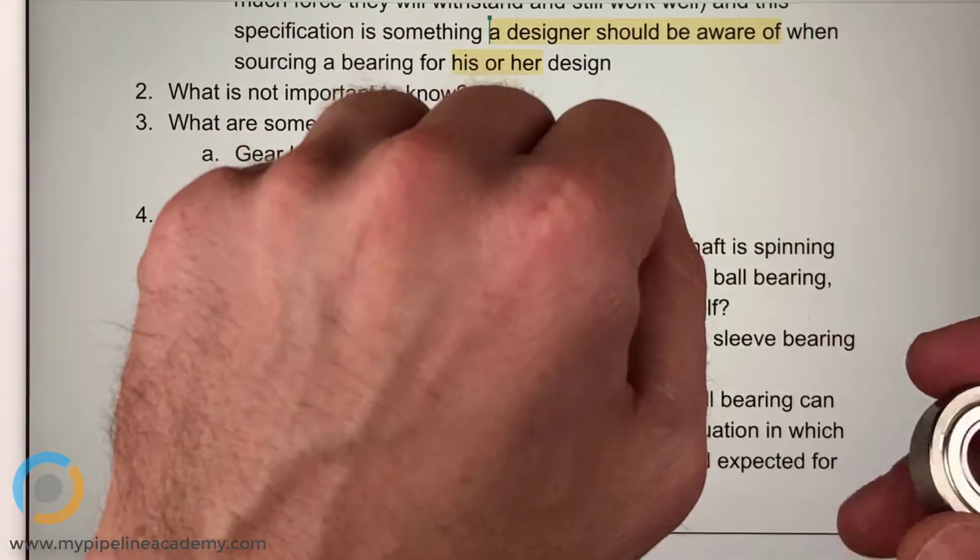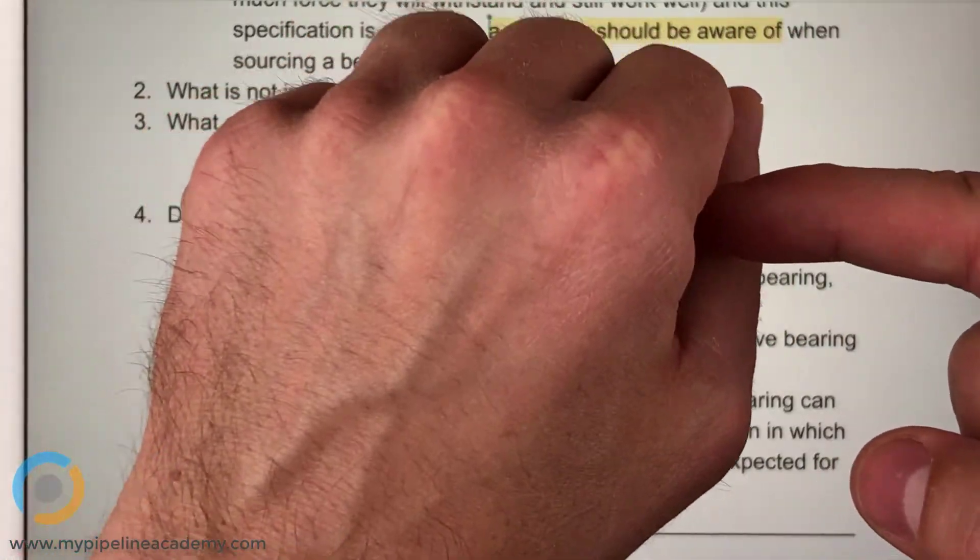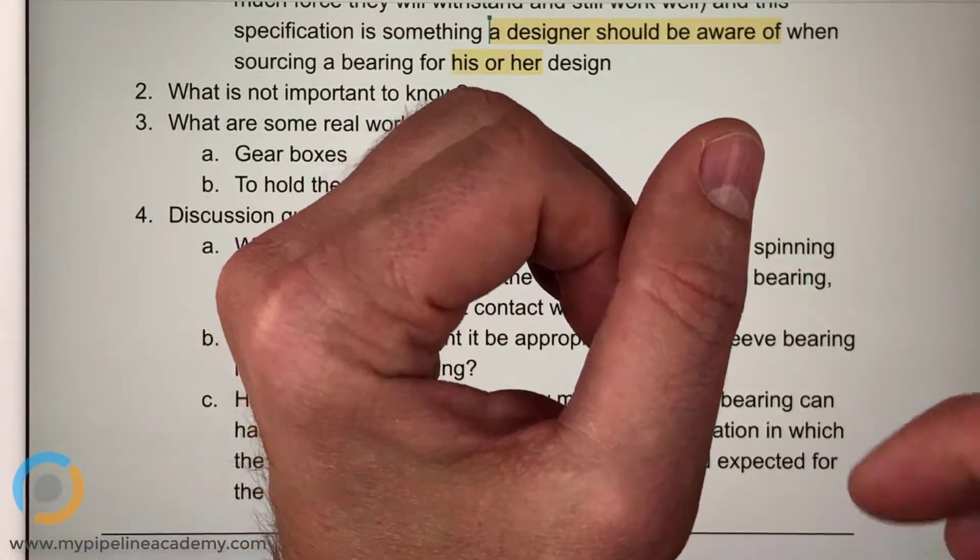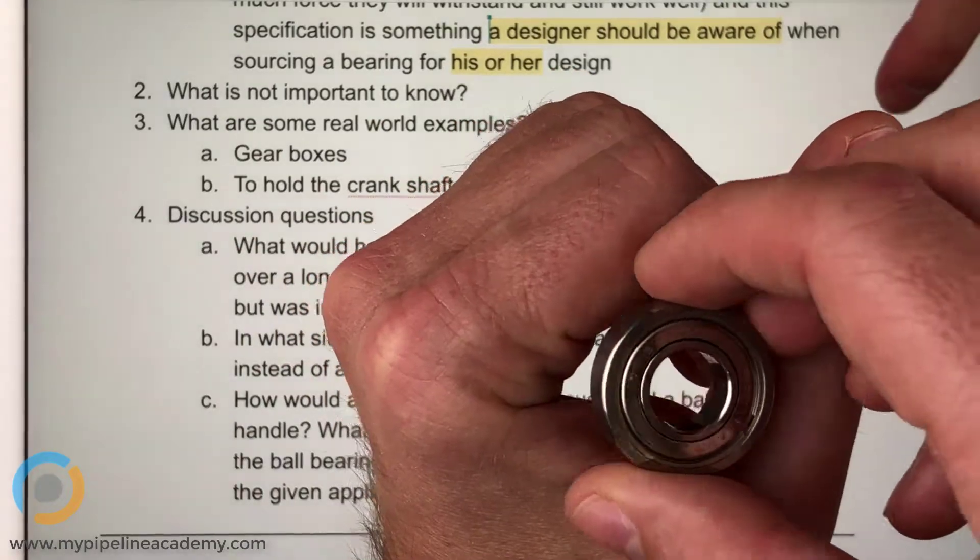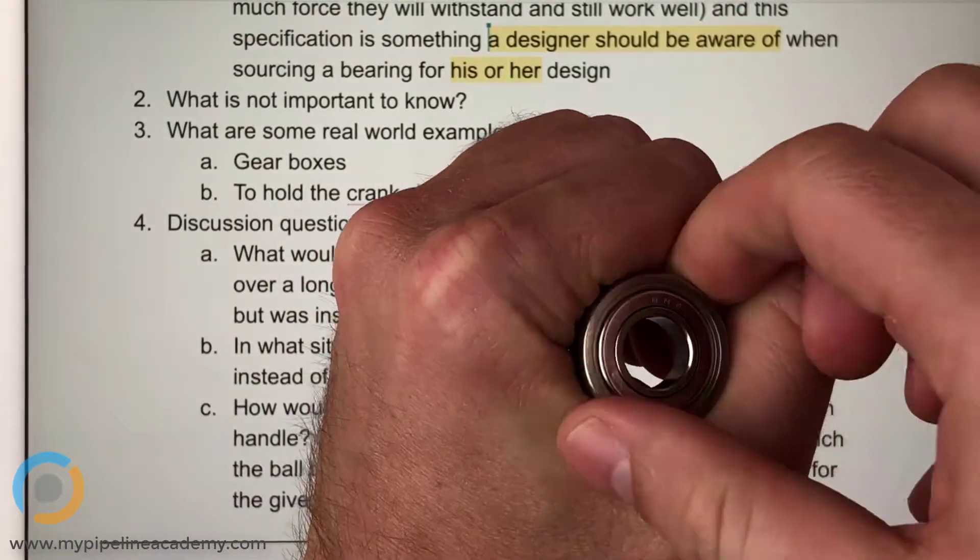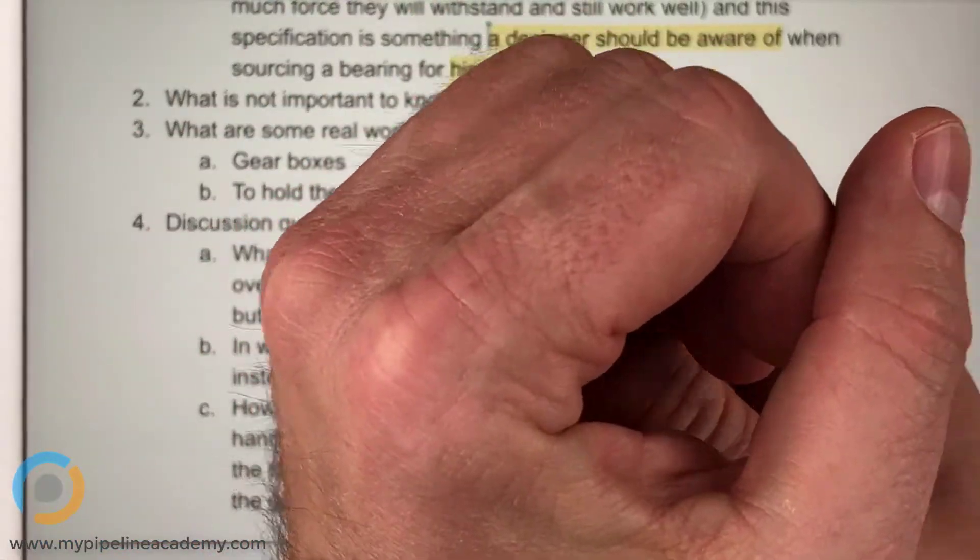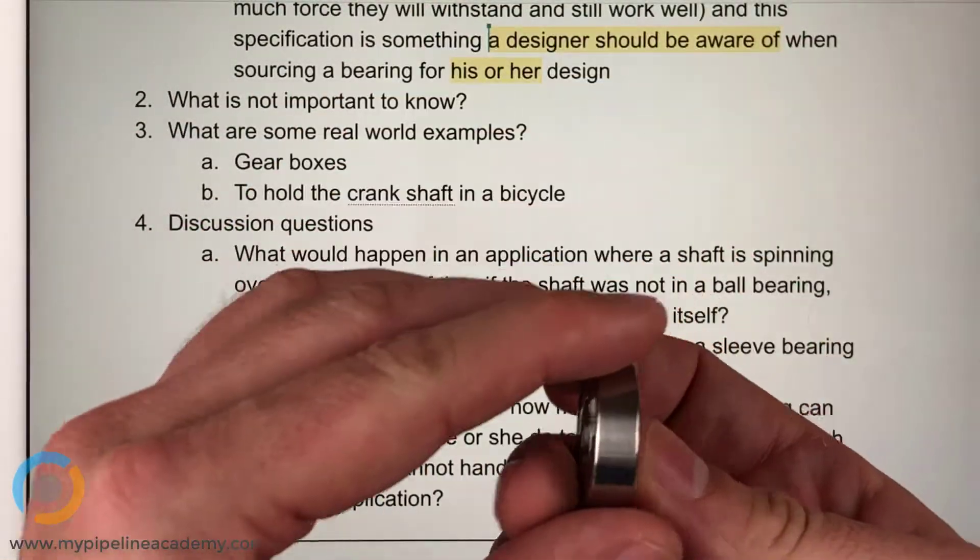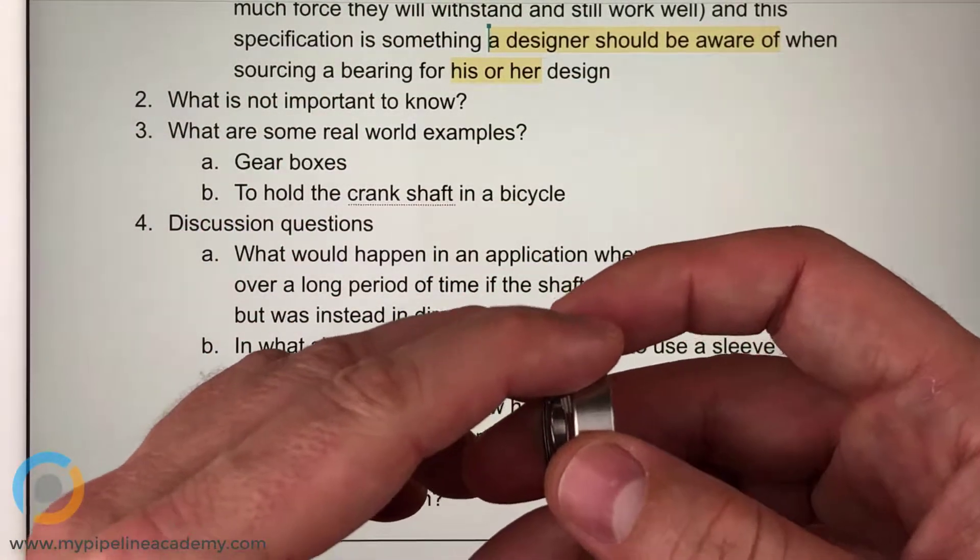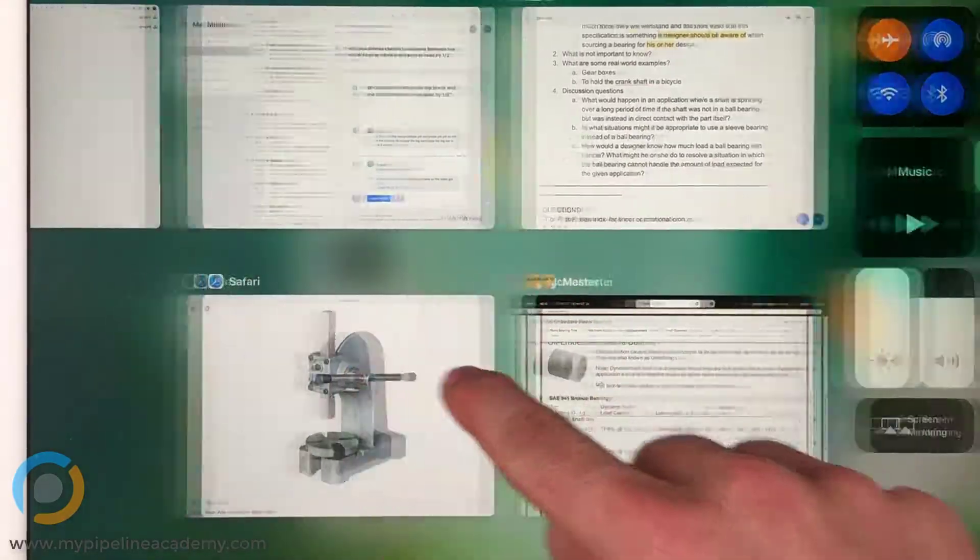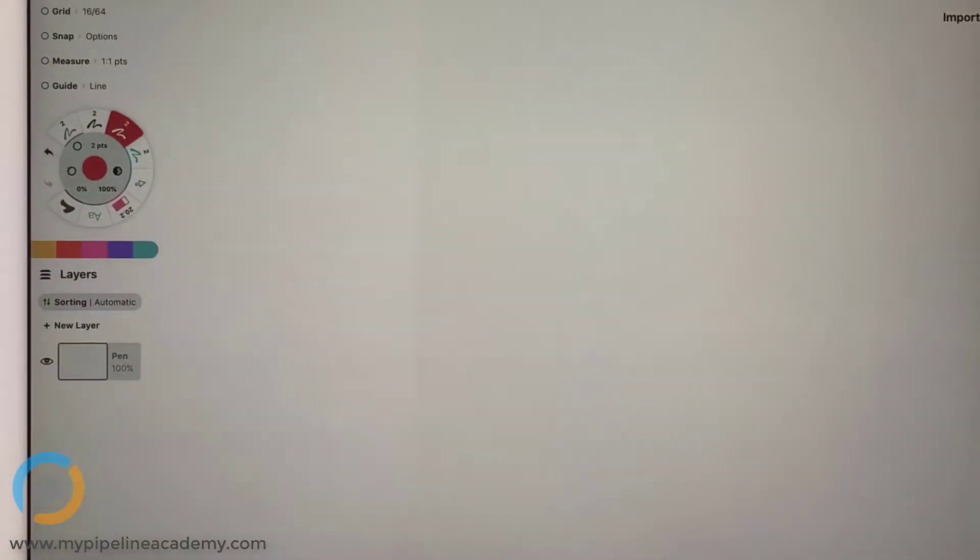One thing to keep in mind though, is that the hole that gets bored or drilled or cut through this housing has to be perfectly straight all the way through. Let's sketch something. This is a good thing to sketch.